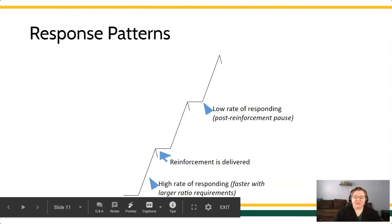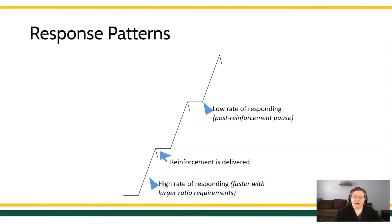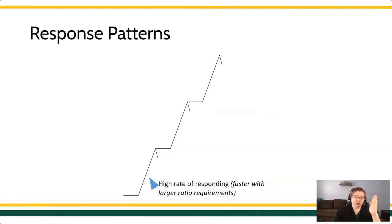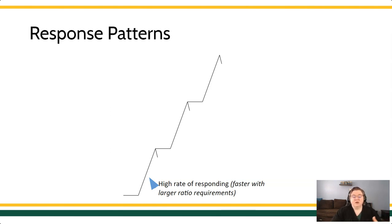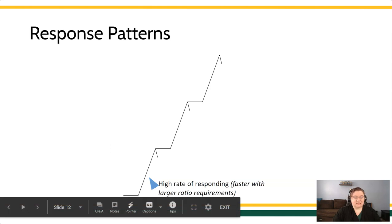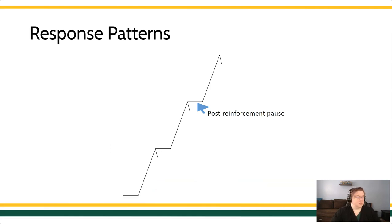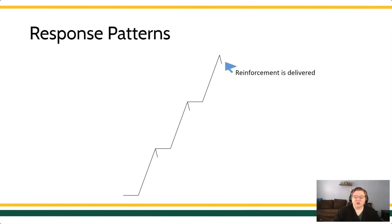What I'm showing you here is what happens in a fixed ratio pattern. First, we have a high rate of responding — the closer you get to 90 degrees, the faster the behavior is happening. In a fixed ratio pattern, we often see a very fast rate of behavior, and it tends to be faster with larger ratio requirements, so it's going to be steeper for an FR50 than an FR5. Once the reinforcer is delivered — indicated by a tick mark — we see something called the post-reinforcement pause, where the learner takes a break and maybe consumes their reinforcer.